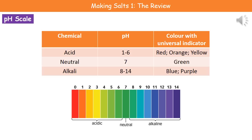Welcome to our review on making salts. First thing we need to do is cast your mind back to when you were in year 7 and what we looked at there was the pH scale. What we've got are three different types of chemical: we've got acids, we've got alkalis, and we've got neutral solutions.